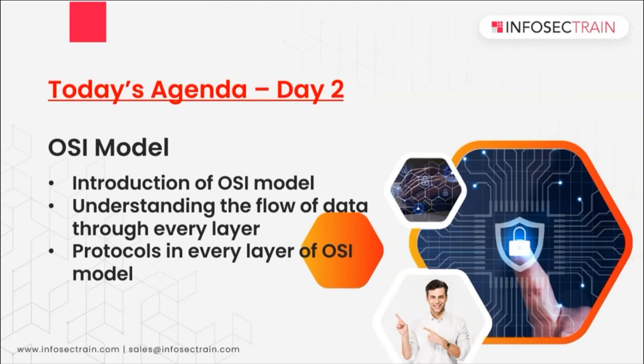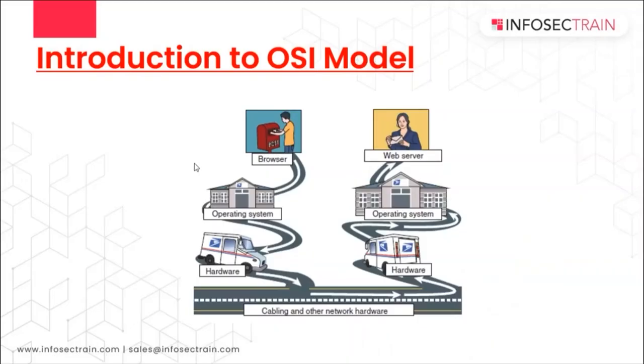Today we are going to talk about the introduction of the OSI model, understanding the flow and the data through each and every layer — we have seven layers — the protocols in every layer, and additionally we are going to talk about various types of attacks which can happen at every layer in terms of cyber security, since attacks are one of the major things we should know.